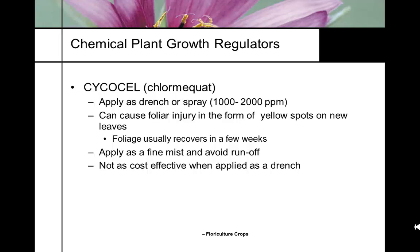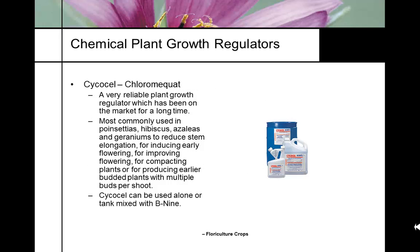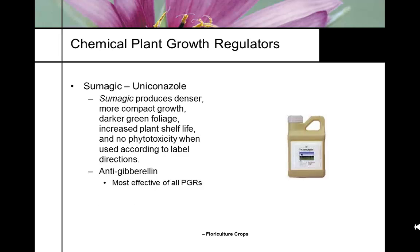The benefits of a shorter, more compact plant include: ships better, not topsy-turvy, appears fuller in the greenhouse, has more intense color, is better shaped, ships better, and lasts longer in the retail environment. A shorter, more compact plant is the target of these plant growth regulator programs.